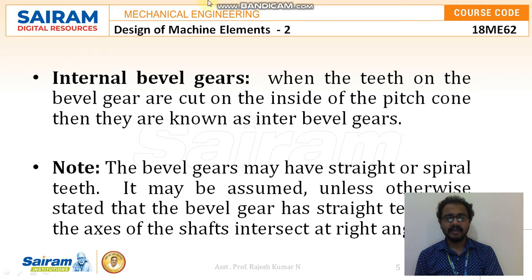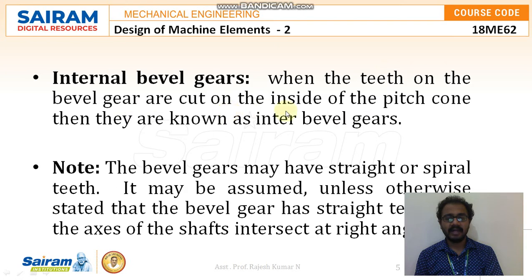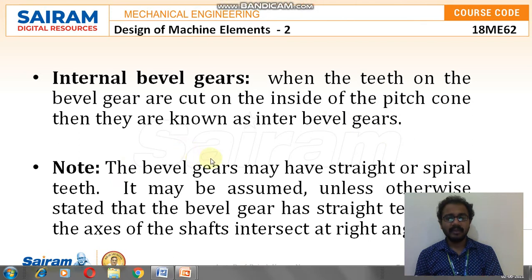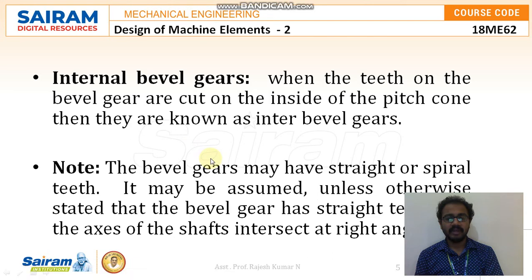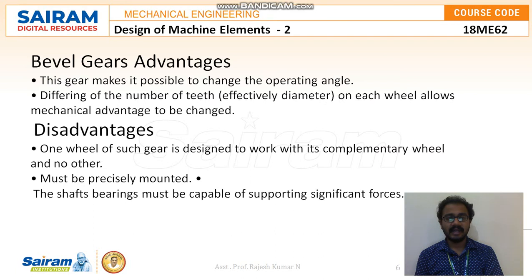The fourth type is internal bevel gears. When the teeth on the bevel gears are cut on the inside of the pitch cone, they are known as internal bevel gears. This is a very rare case with very few applications. It is worth noting that bevel gears may have straight or spiral teeth; unless otherwise stated, it may be assumed that bevel gears have straight teeth and the axes of the shafts intersect at right angles.